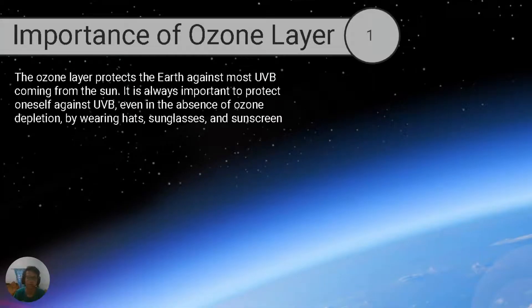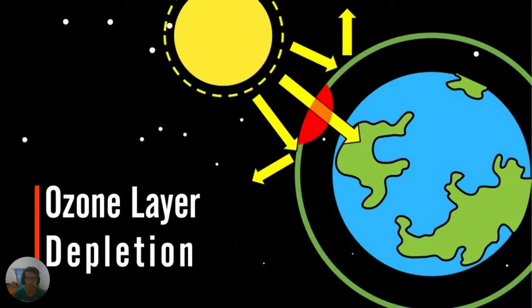What is the importance of the ozone layer? The ozone layer protects the Earth against most UVB coming from the sun. It is always important to protect oneself against UVB, even in the absence of ozone depletion, by wearing hats, sunglasses, and sunscreen.